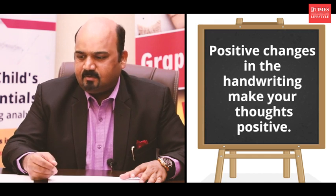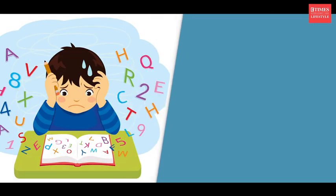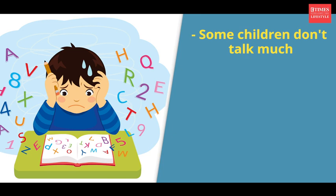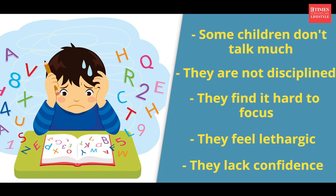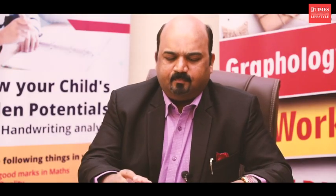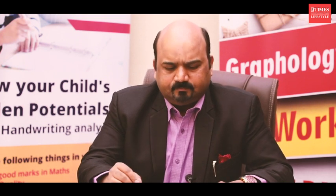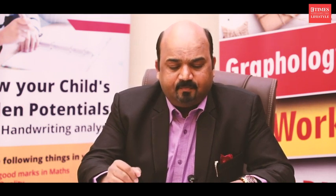The common challenges that children face are: the child doesn't talk much, he is not having good discipline, he is not focusing enough, he is not energetic, or he doesn't have confidence. These are common things parents tell us. Today we are going to focus on four or five traits that every child should have, and if a child can develop these traits he will be good in most areas.